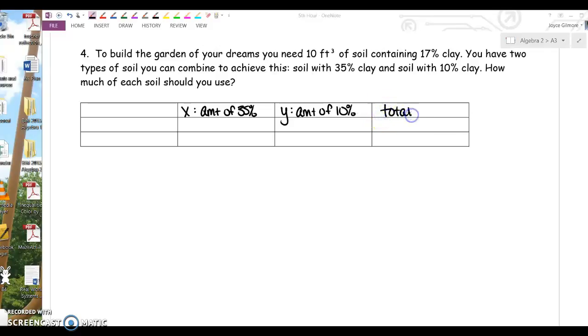So our total, and then in parentheses I'm going to write 17%. We want our total to be a mixture that is 17% clay.